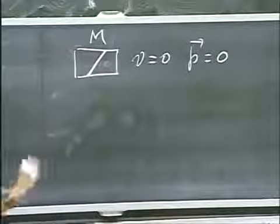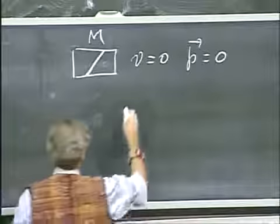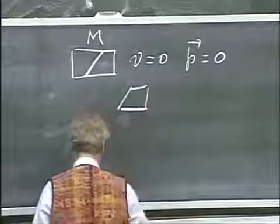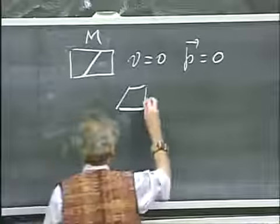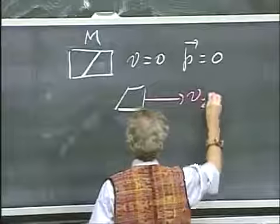And there comes the bang, and one piece flies in this direction with a certain velocity, V2 prime.